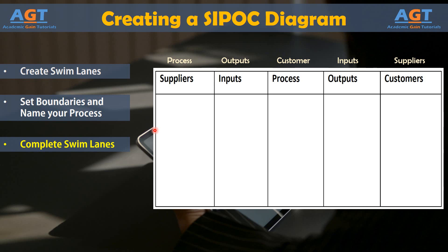Once you have a rudimentary process definition, begin with either inputs or outputs. Ask the team: what does this process make? What comes out of this process? Those answers go into the outputs swim lane. Next, ask the team who or what uses the things that come from this process. Place those answers in the customer swim lane. Remember that customers can be external or internal, and another process can be the customer in cases of automation.